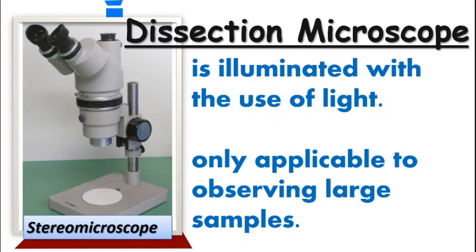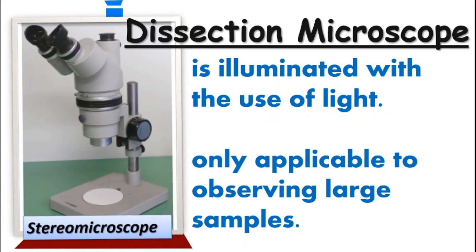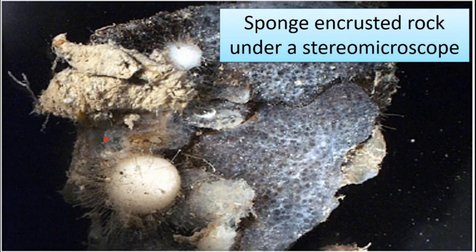Next is the dissection microscope. Like a compound microscope, a dissection microscope is illuminated with the use of light. It is also known as a stereomicroscope. It is used for dissection to obtain a better view of the specimen by creating three-dimensional images. The magnification capacity of a dissection microscope is usually limited up to four times the original size of a specimen, making it only applicable to observing large samples.